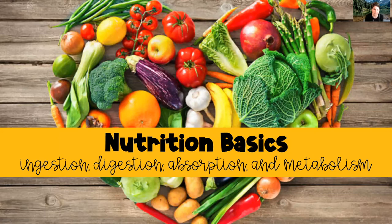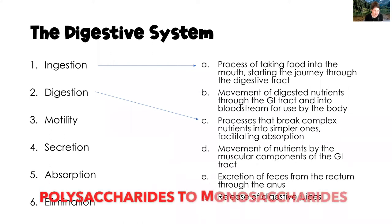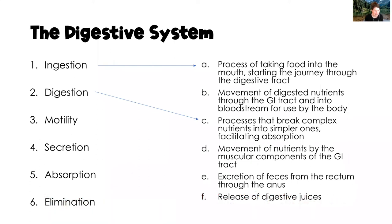Let's start out with some basic terms and see what you remember maybe from an A&P class. Ingestion is the process of taking food into our mouth and starting the journey through the digestive tract. Digestion is the process that breaks complex nutrients like complex carbohydrates into much smaller ones that facilitate the body's ability to absorb those nutrients.